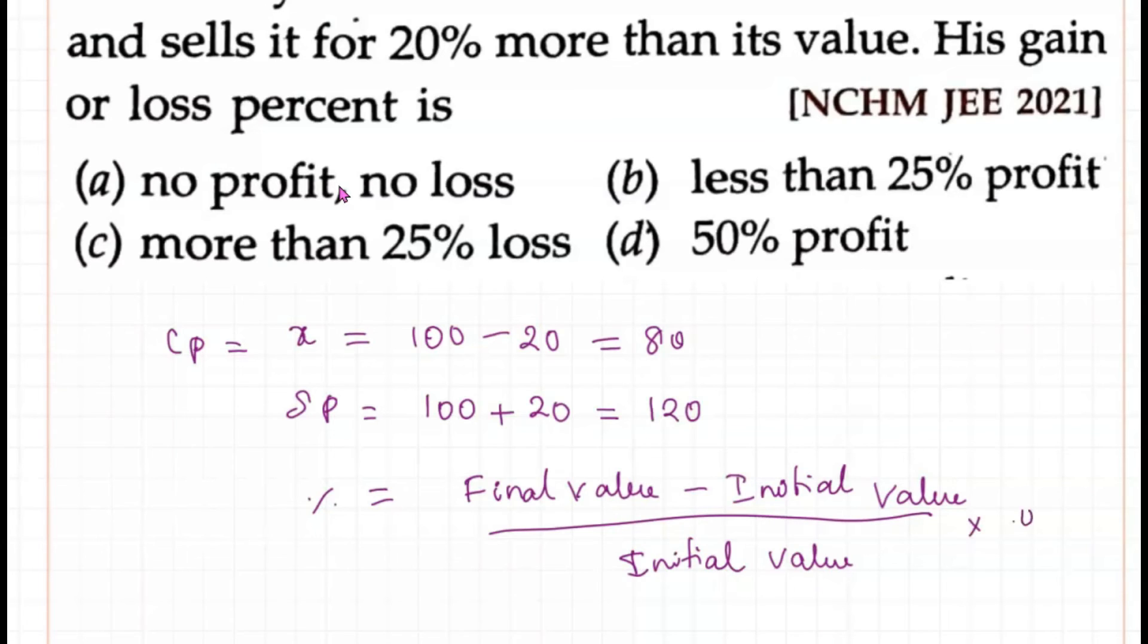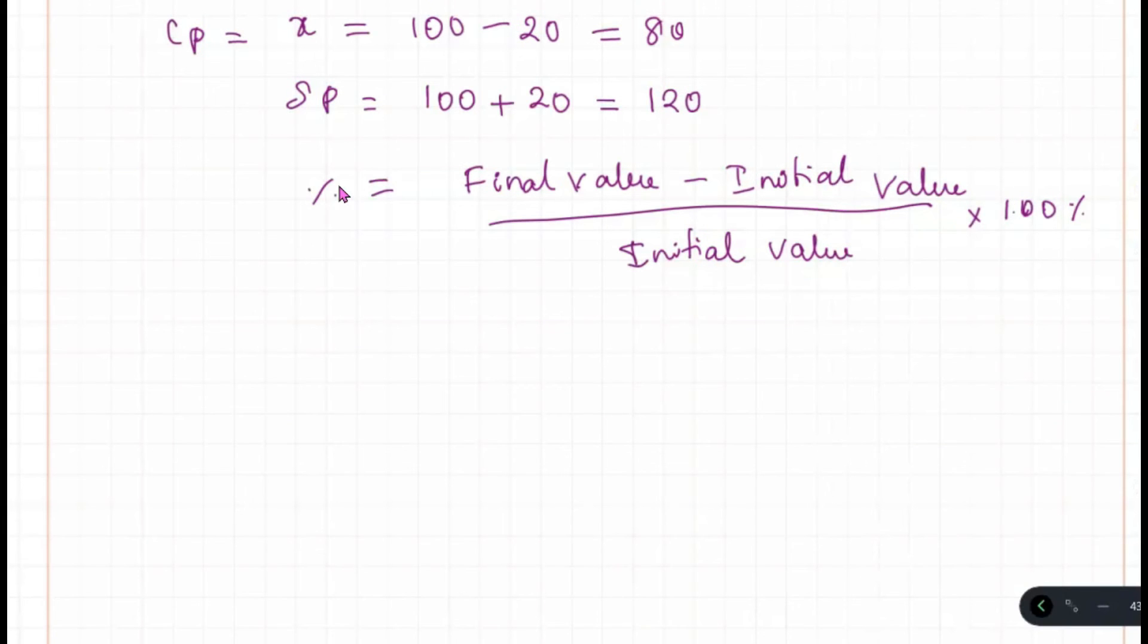Initial value is 100 percentage. So the final value we know here is 120, which equals 120 minus 80 divided by initial value 80 times 100. Which equals 40 divided by 80 times 100 percentage. So which equals 50 percentage.